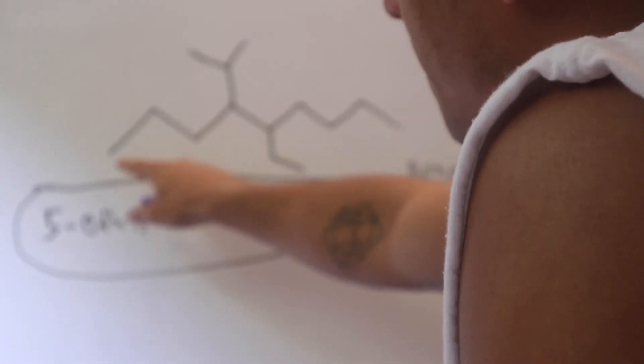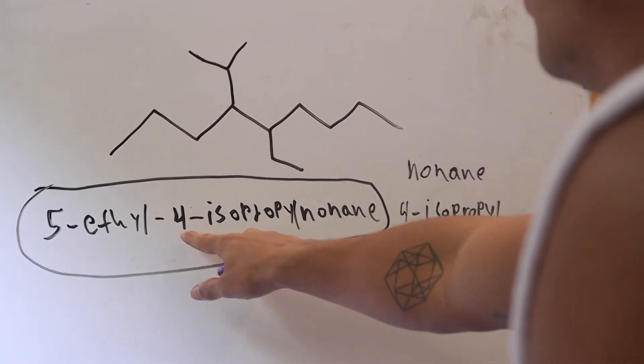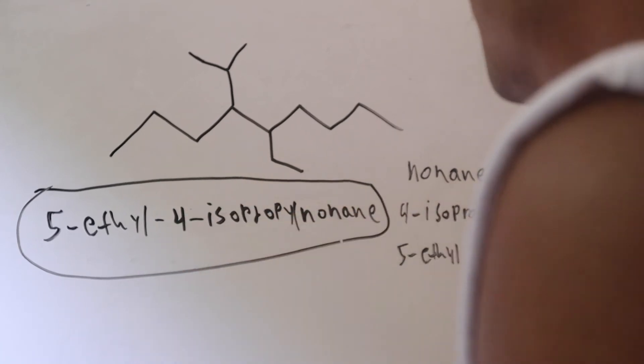But if you went from left to right, you would have gone 1, 2, 3, 4. So it would have been on the fourth. So that's why you designated 4, instead of 6.